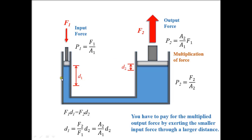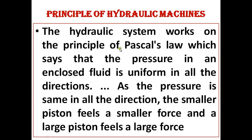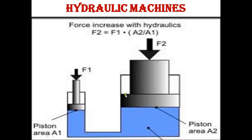Piston 1 has a very small area, whereas piston 2 has a big area, and this gives you the multiplication of force. This is how the hydraulic machine works — based on Pascal's law, the pressure in an enclosed fluid is uniform in all directions, as shown by these two diagrams.